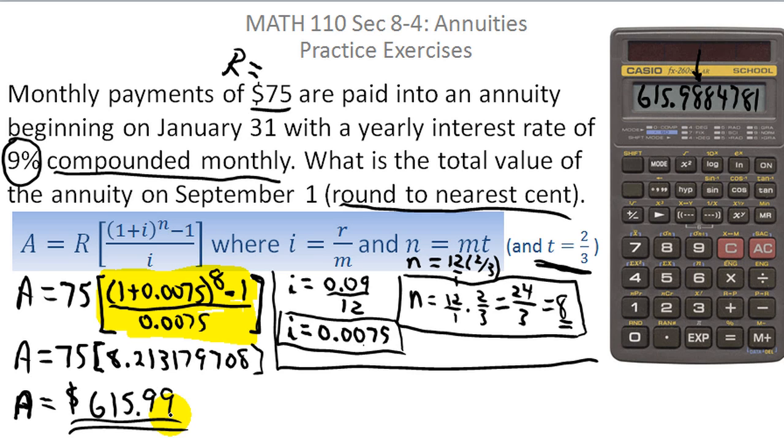So if you made monthly payments into an annuity paying 9% compounded monthly and you did that for eight months, at the end of that time to the nearest cent, that account would be worth $615.99.